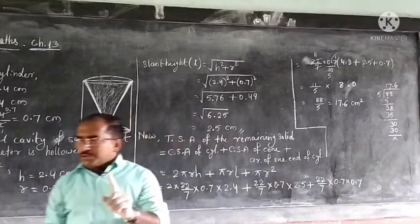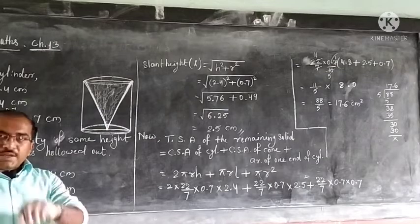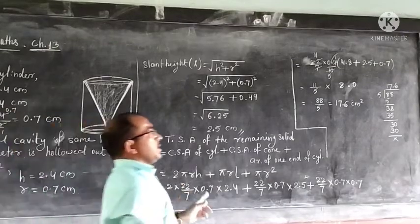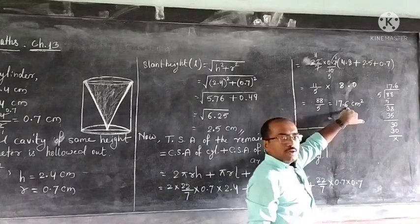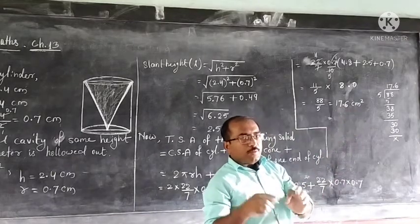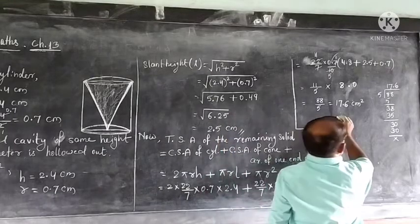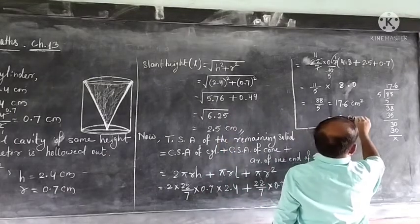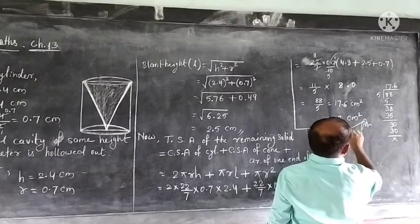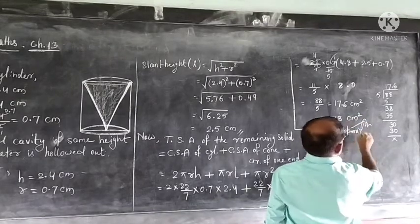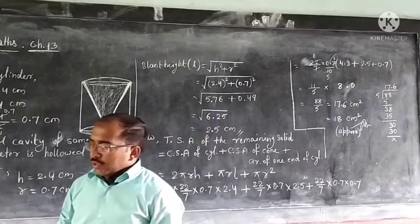The question says to give the answer to the nearest 10. Since 17.6 is closer to 18 than to 17, we round it up. The total surface area of the remaining solid is approximately 18 cm². We have done question number 8. Hope you have understood — learn it well.